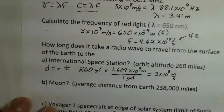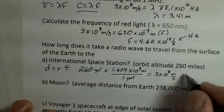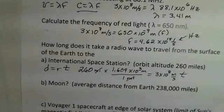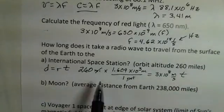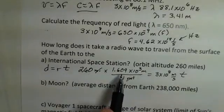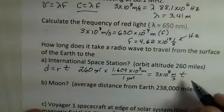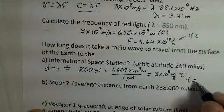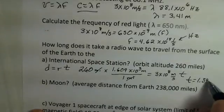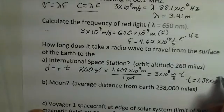And our miles units have canceled off. We have meters on the left as we should. And now we have 3 times 10 to the eighth meters per second. And then we have to solve for time. Again, pause and divide. Well, multiply first. 260 times this conversion factor to get meters. Then divide both sides by 3 times 10 to the eighth. And you should come up with a small time. I came up with 1.39 times 10 to the minus 3 seconds.